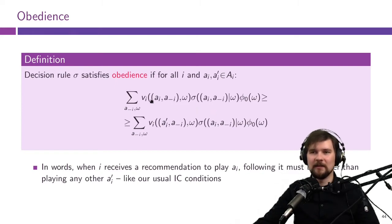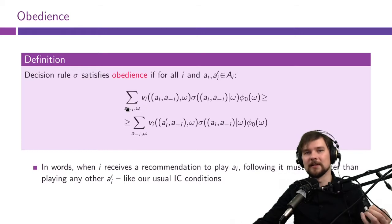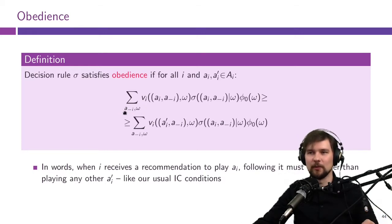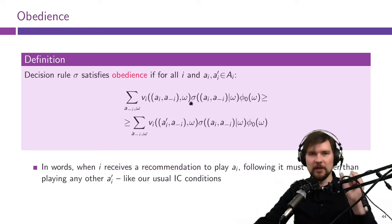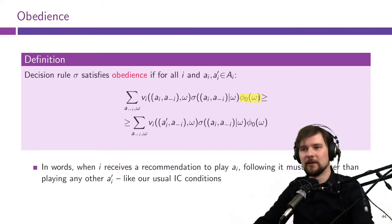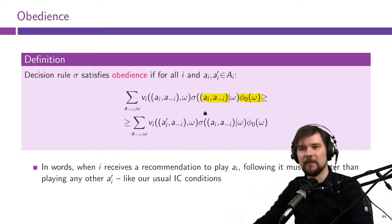This condition should be seen as a Bayesian incentive compatibility constraint — not dominant strategy IC, so we do not need it to hold for every profile of other players' actions. We take the sum of payoffs that the player gets given action aᵢ and a₋ᵢ and state ω, times the probability of receiving recommendation aᵢ, other players receiving a₋ᵢ, and the state being ω. This joint probability is given by the prior φ₀(ω) times σ(action profile | state ω).